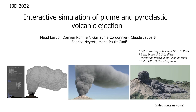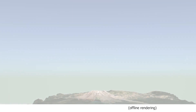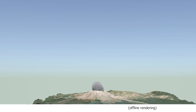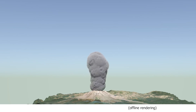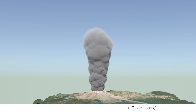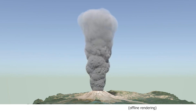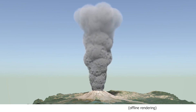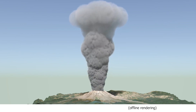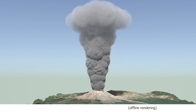We propose a real-time animation method for the ejection of gas and ash mixtures in volcano eruption. A rising plume is composed of hot gas and ash particles which progressively entrains more air before reaching a maximal altitude.